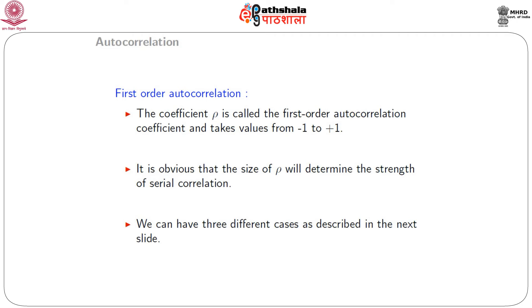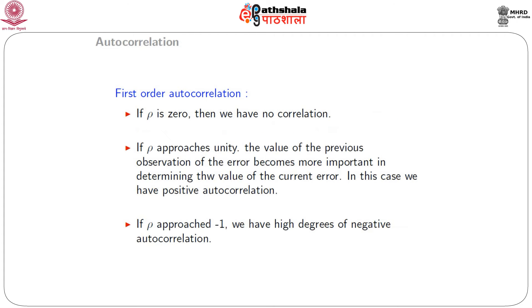There are three separate cases based on the value of rho. If rho is 0, there is no correlation between the error terms. If rho approaches +1, the previous error becomes more important in determining the current error — this gives high positive autocorrelation. If rho approaches -1, we have a high degree of negative autocorrelation.